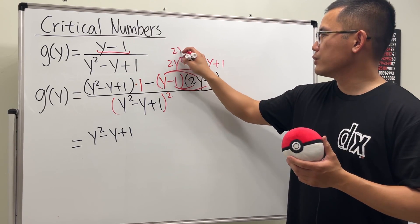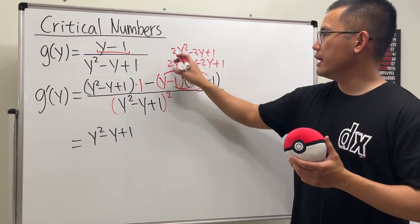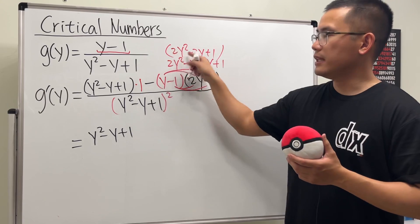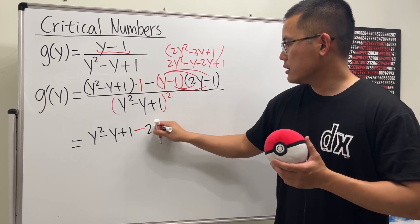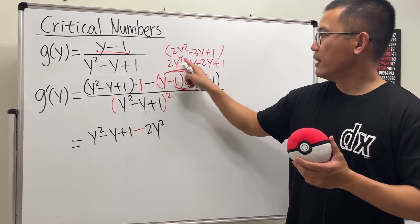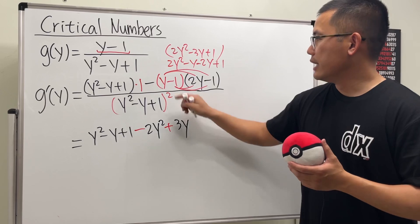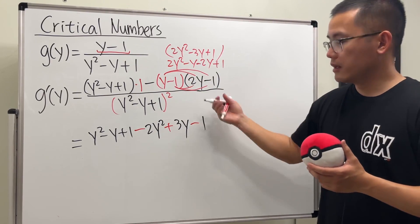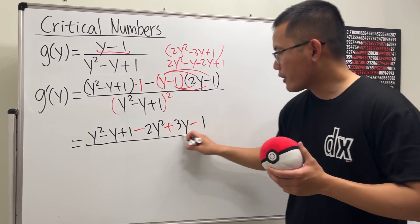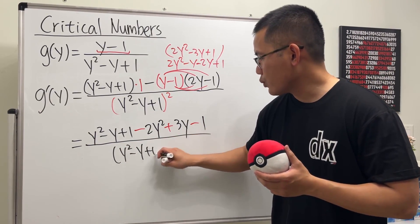And then this right here is, of course, 2y squared minus 3y plus 1. And again, we will have to distribute the negative. So negative and then 2y squared. And then negative times negative, so we have the plus 3y. And lastly, negative times 1, which is negative 1. And then all over the bottom, which is y squared minus y plus 1 squared.